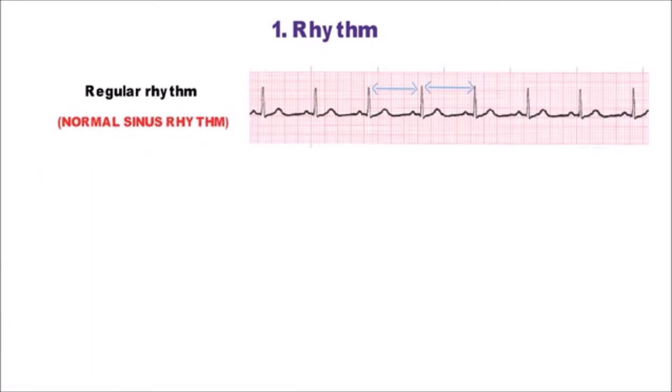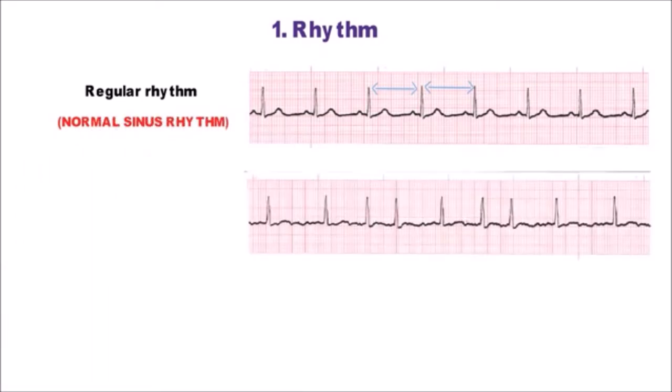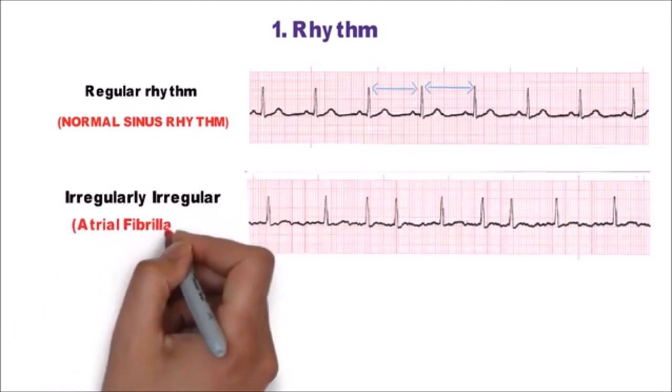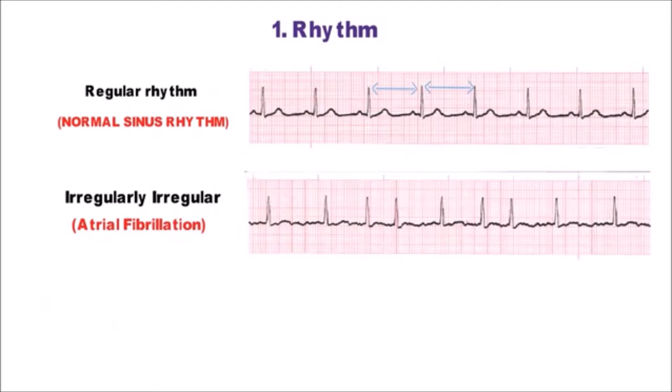In this second ECG as you can see the RR interval is not equal at any time and there is no identifiable P wave. The rhythm is irregularly irregular which occurs most commonly in atrial fibrillation.